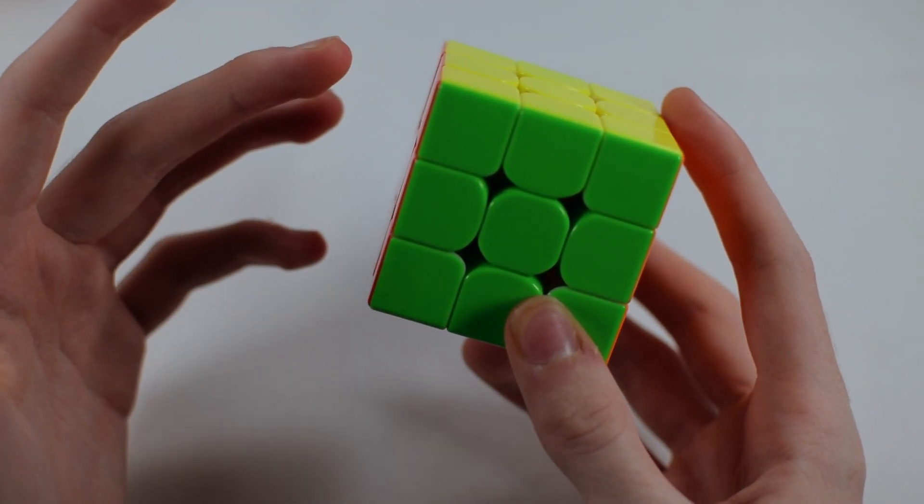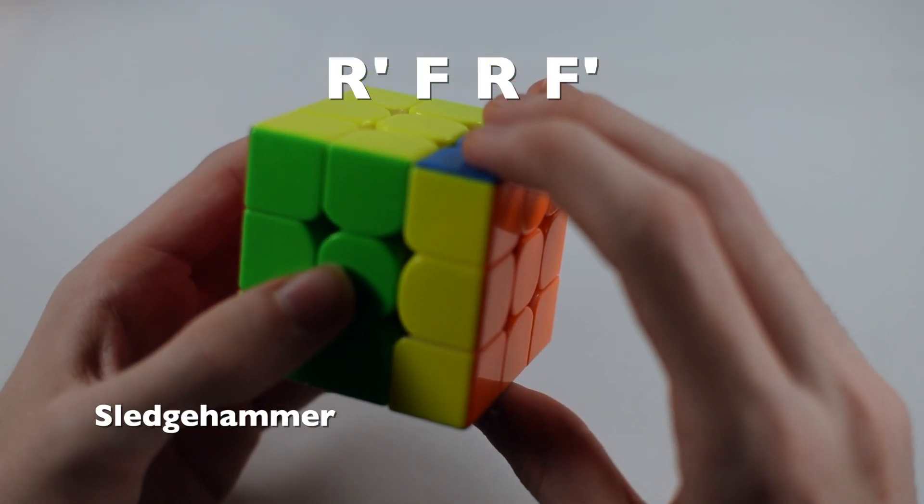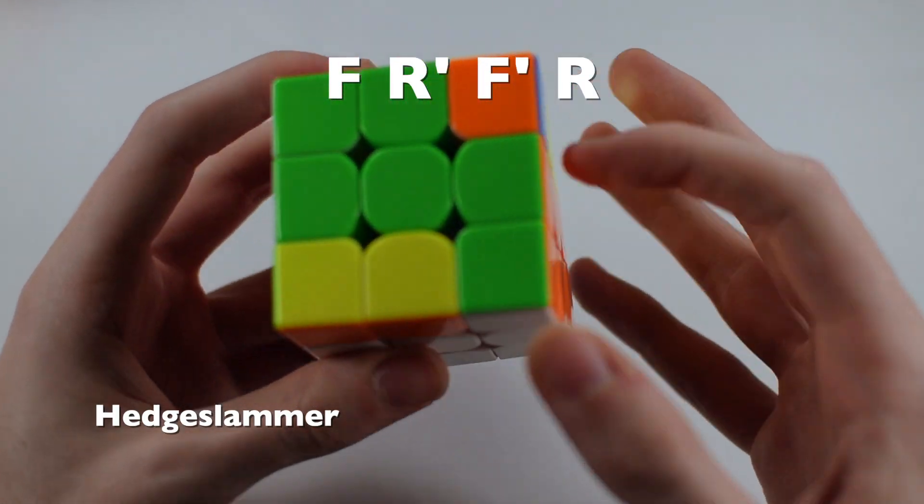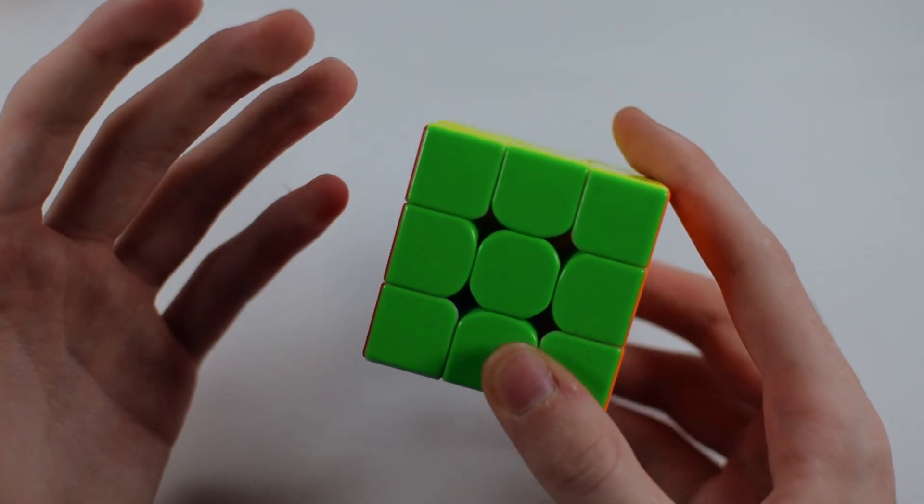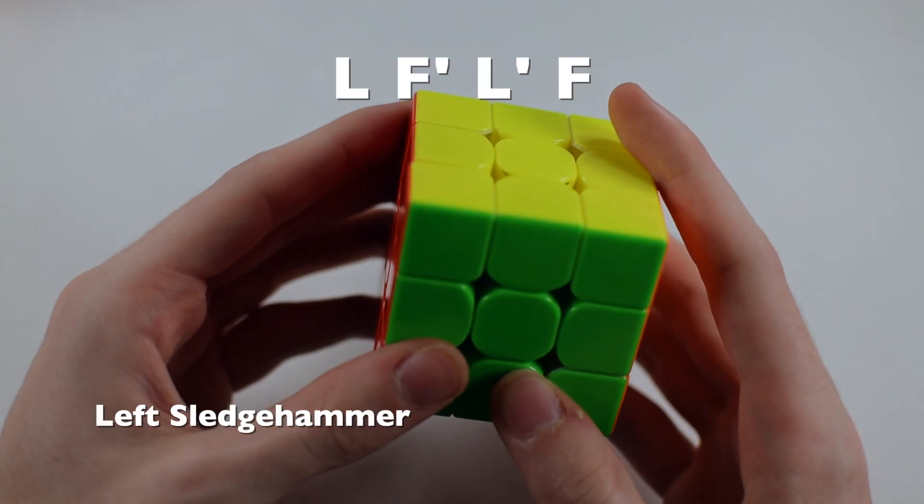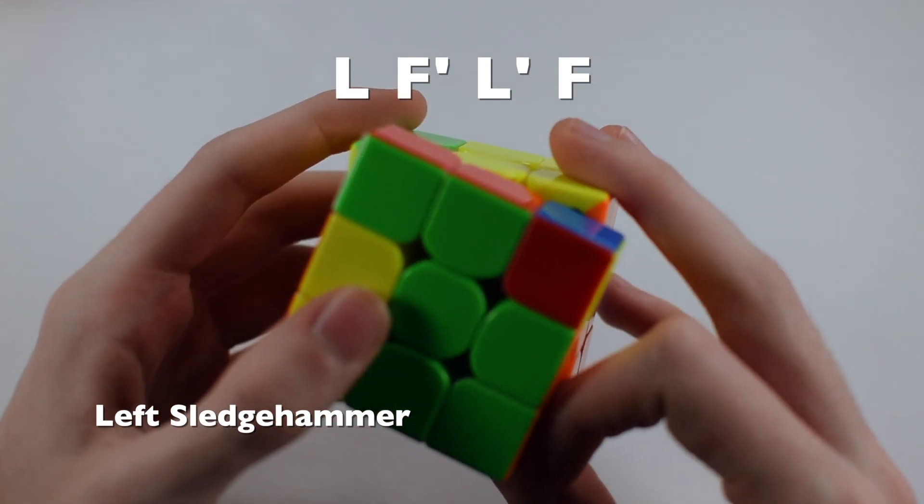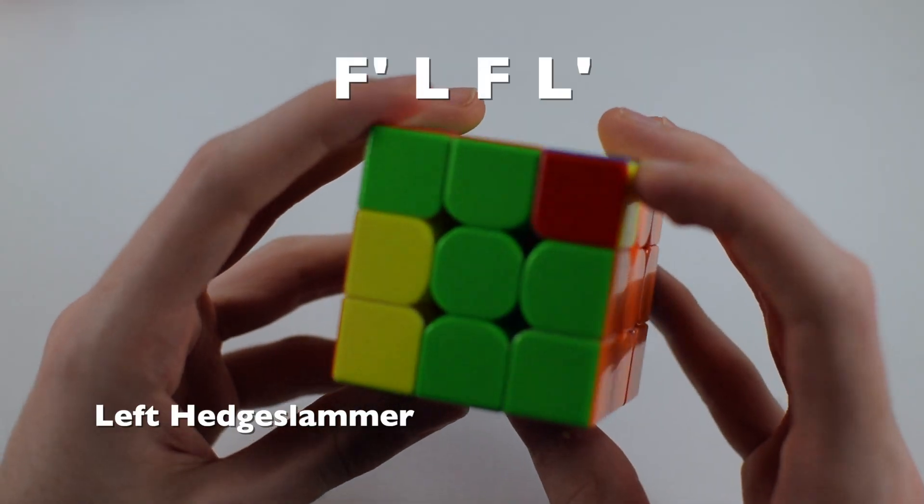Now, let's focus on all the remaining algorithms. So sledgehammer is R' F R F'. Hedge slammer is F R' F' R. Left sledgehammer is L F' L' F.